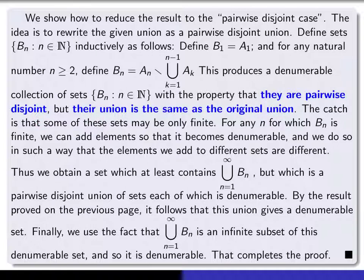Now you might think we can apply the result from the previous page to the set of b's to deduce that the union of the b sub n's is a denumerable set. But the catch is that by subtracting off things like this, you may be turning some of the b sub n's into finite sets.